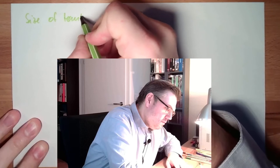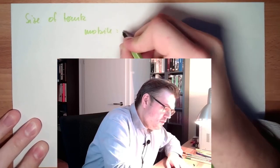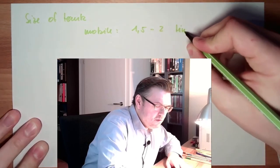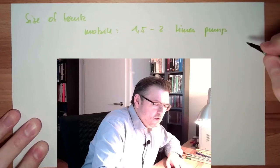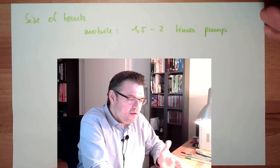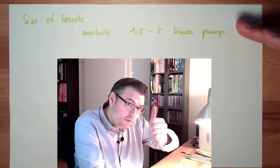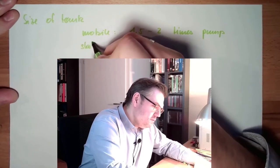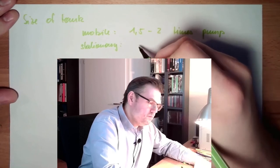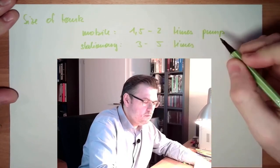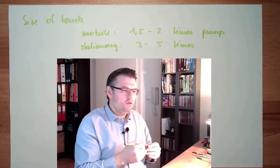There are rules of thumb. In mobile hydraulics, the size of tank should be 1.5 to 2 times the pump capacity. So if the pump is pumping out 10 liters per second, the mobile tank should be around 15 or 20 liters. For stationary applications, three to five times the pump flow rate.